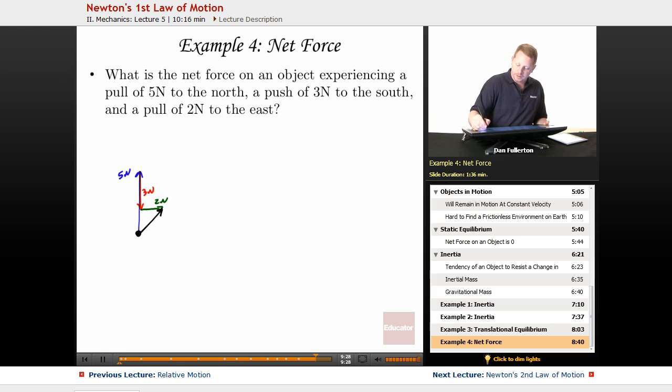If I broke this up into components, I would have 2 newtons to the east, and if I had 5 up and 3 back, I must have 2 newtons north. If I want the magnitude of that net force, that's just going to be the square root of 2 squared plus 2 squared.